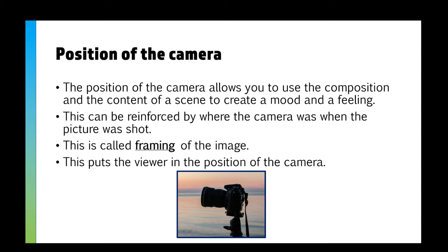The position of the camera allows us to use the composition and content of the scene to create some sort of mood and feeling. It doesn't matter if you're making a video, a film, an animation, or just taking a photo — there's usually some form of mood or feeling you're trying to convey. This can be reinforced by where the camera is when the picture is taken or the video is filmed, and this is called framing. Quite often it puts the viewer in the position of the camera to make them feel as if they're in the scene.